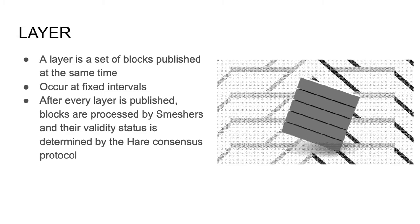A layer is a set of blocks published at the same time. Layers occur in fixed time intervals — for example, 5 minutes. Immediately as every layer is published, its blocks are processed by Smeshers, as their validity status is determined using the HARE consensus protocol.